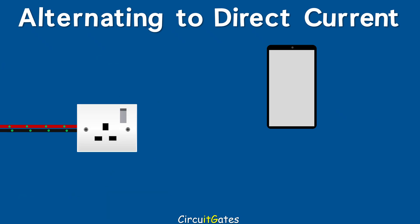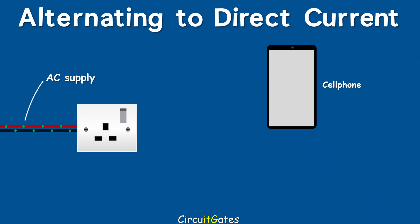Most electrical devices like cell phones, radios, TVs and more require a steady voltage and current supply. However, electricity is mostly generated and transmitted as AC, because AC is more effective in transmission and power generation than DC. Therefore, in order to charge our cell phones, we need first to convert AC to DC.